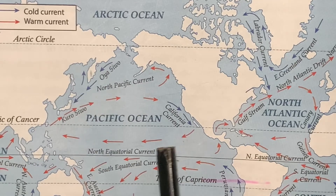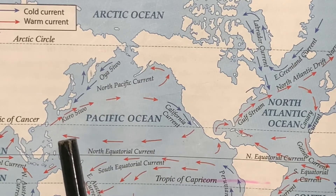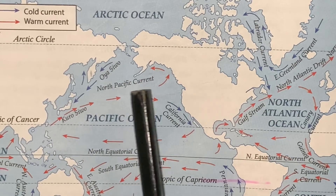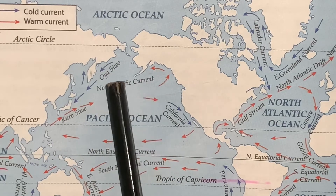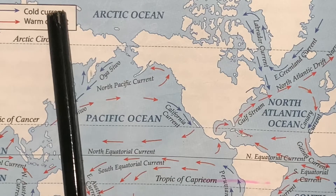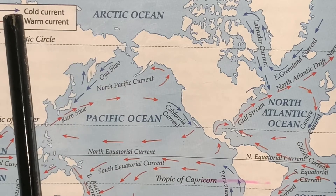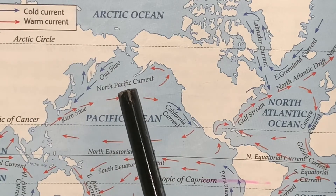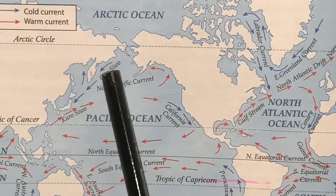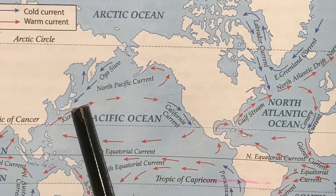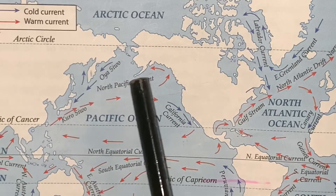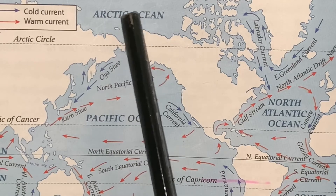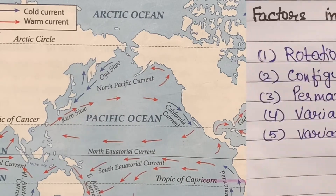the warm or tropical latitudes towards the cooler or temperate latitudes. They bring warm water from the lower latitudes to the higher latitudes. Just opposite, you will see that cold currents are shown with the help of blue arrows.